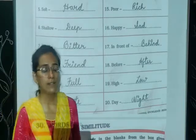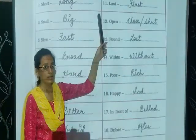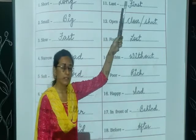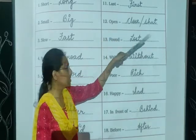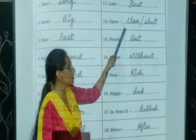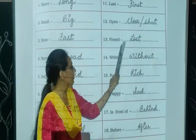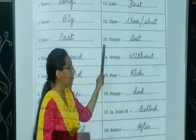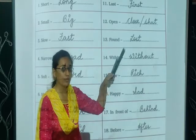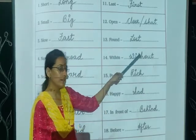Early — the opposite is late. Eleven: the opposite of last is first. Twelve: open — close, or you can also write shut. Thirteen: found — the opposite of found will be lost.